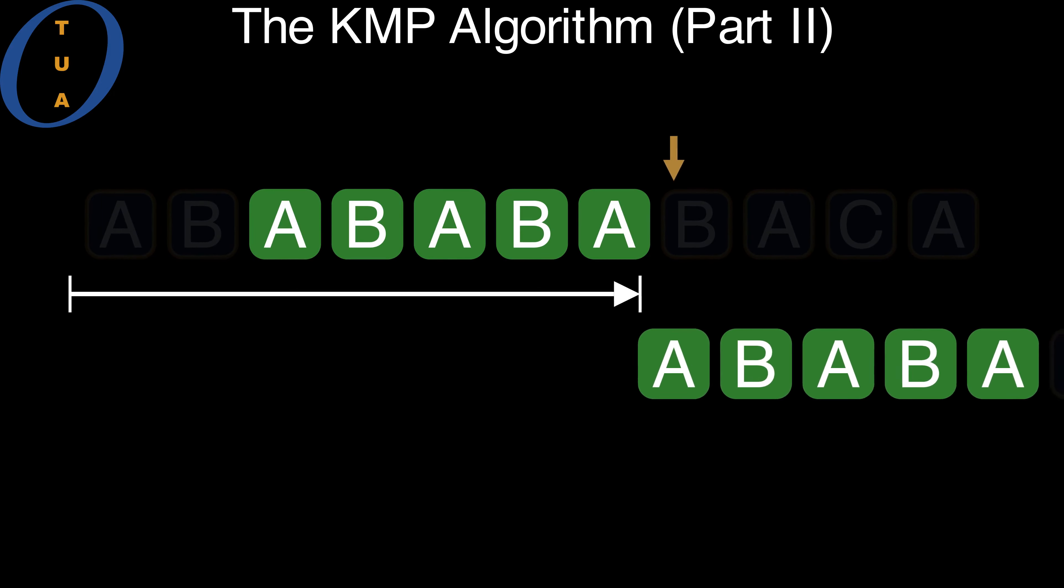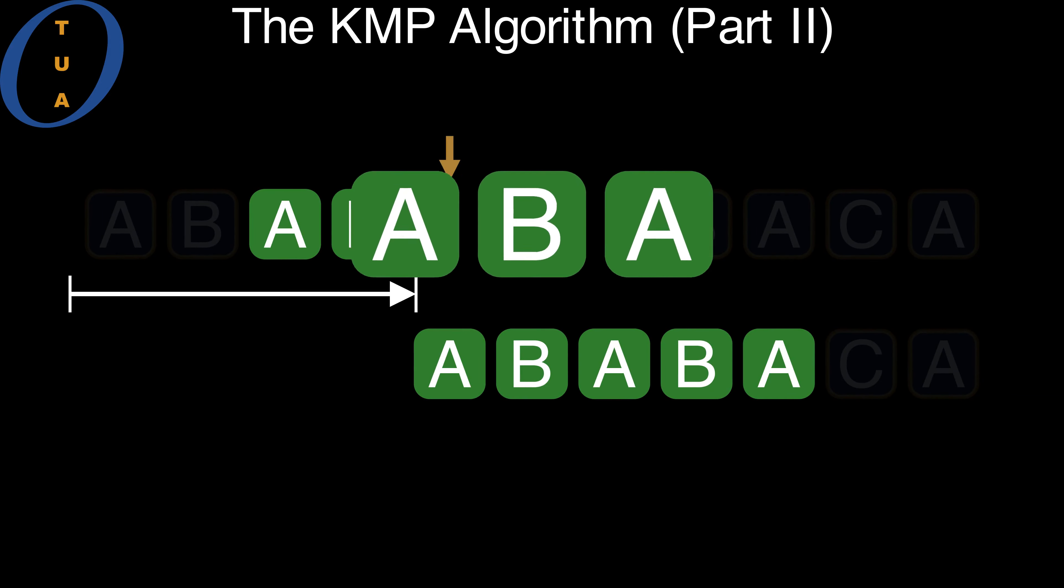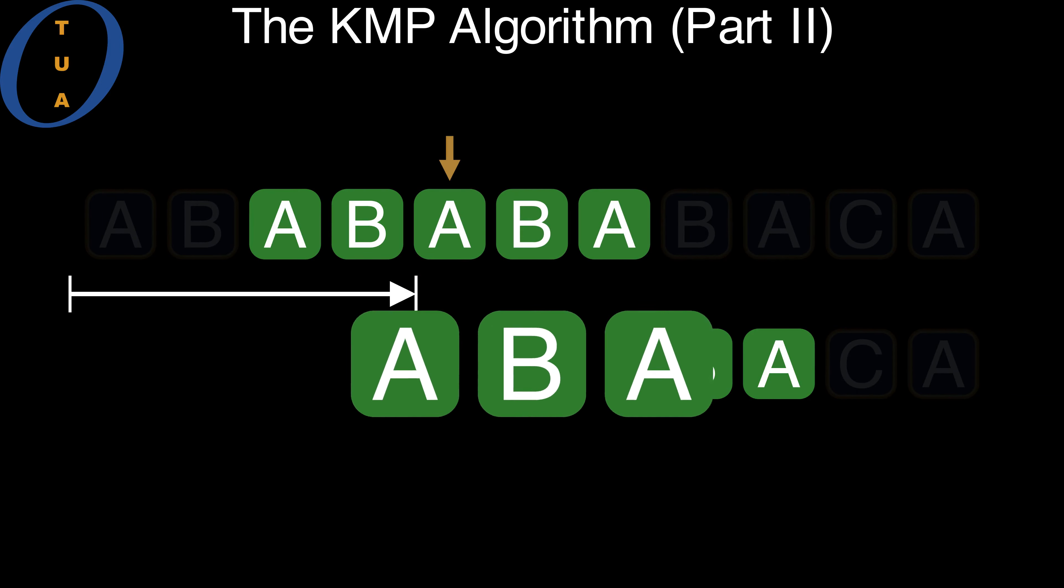This means that we want our shift to be the smallest, which corresponds to aligning at the largest proper border.